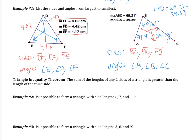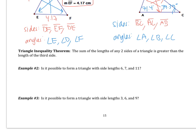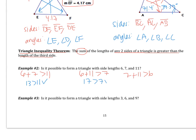The second part of this section involves the triangle inequality theorem, which states that the sum of the lengths of any two sides of a triangle is greater than the length of the third side. For example 2: can you form a triangle with side lengths 6, 7, and 11? Check: 6+7=13 > 11 ✓, 6+11=17 > 7 ✓, and 7+11=18 > 6 ✓. Yes, these sides form a triangle.